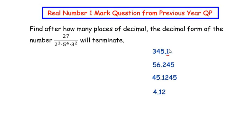56.245 has three decimal places because after the decimal point there are only three digits, and this is also terminating because after five you do not see any number. The third example, 45.1245, terminates after four decimal places.